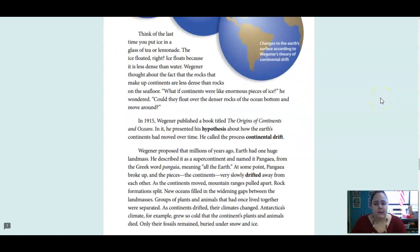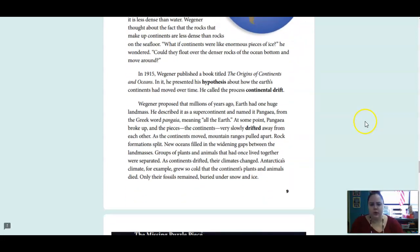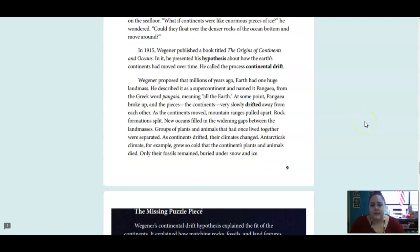Think of the last time you put ice in a glass of tea or lemonade. The ice floated, right? Ice floats because it is less dense than water. Wegener thought about the fact that the rocks that made up continents are less dense than rocks on the seafloor. What if continents were like enormous pieces of ice, he wondered. Could they float over the denser rocks of the ocean bottom and move around? In 1915, Wegener published a book called The Origins of Continents and Oceans. And in it, he presented his hypothesis about how Earth's continents had moved over time. He called the process continental drift.